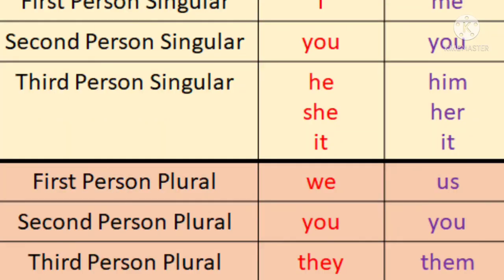Now coming to the plurals. For first person plural, we use 'we' as subject pronoun and 'us' as object pronoun. For second person plural, it remains the same as singular — 'you' for both subject and object. And for third person plural, we use 'they' as subject pronoun and 'them' as object pronoun.